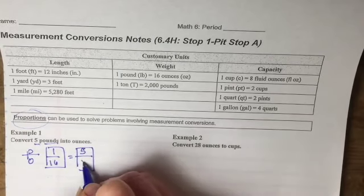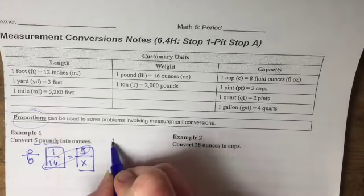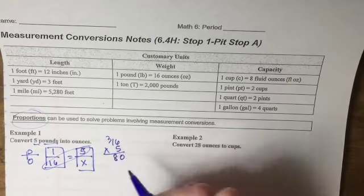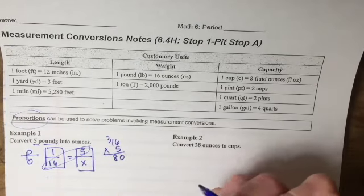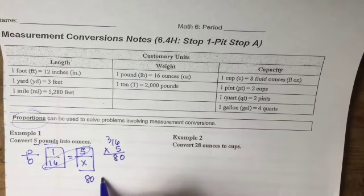So to solve this proportion I know I need to multiply 16 times 5. That gives me 80 and then I would divide by 1. Well 80 divided by 1 is just 80 so this means that 5 pounds is equal to 80 ounces.